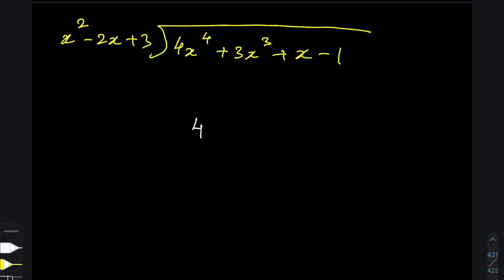Write down the coefficients of the dividend without missing out any powers of x. And as you can see, since there was no x squared, I wrote a 0 for that.